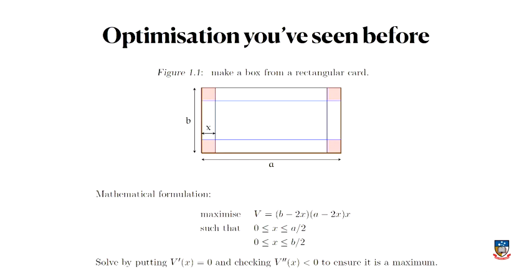You can solve this by differentiating that V function, setting it equal to zero, checking that you have a maximum or minimum, and then writing down the solutions. It's a high school calculus problem of the same form: maximizing something subject to constraints. The constraints are pretty obvious — x can't be more than half the width or half the height of the cardboard, and all values have to be positive.